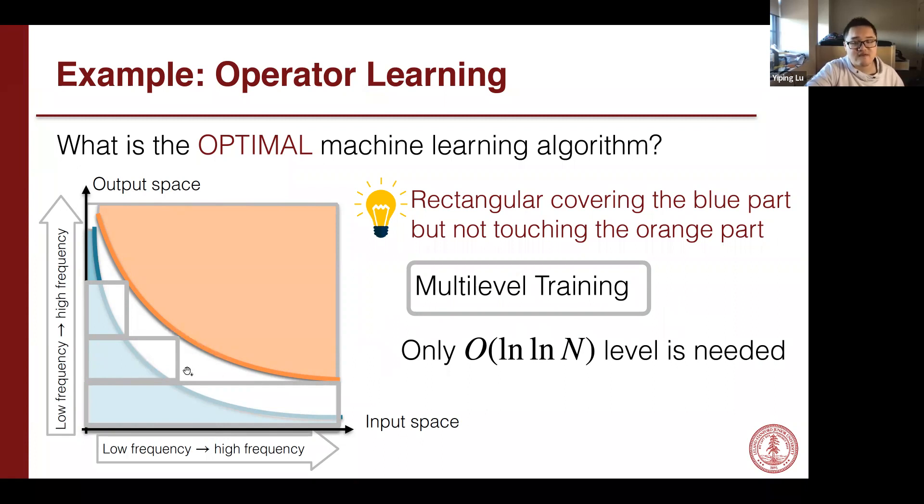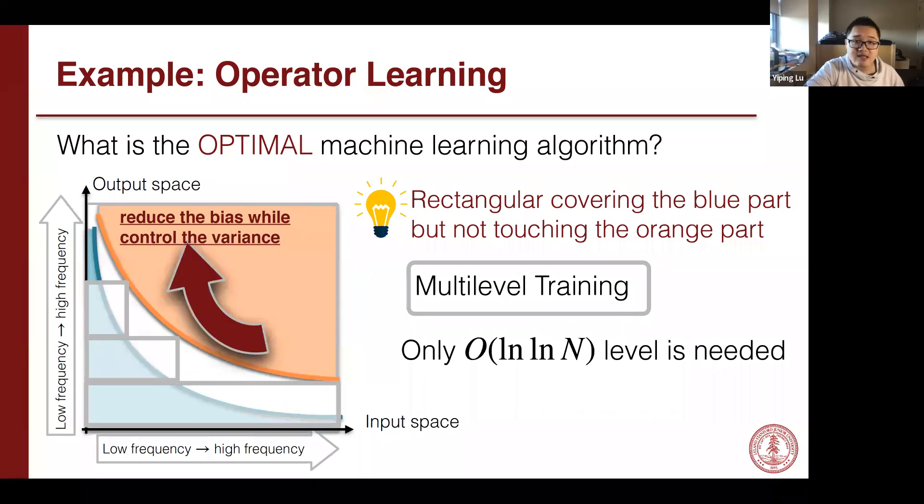Our algorithm is to perform multiple levels of training. We have multiple rectangulars, meaning multiple ridge regressions with different regularizations. And we ensemble them together so that we can cover all the blue area without touching the orange area. In most cases, only log N levels are needed. Our idea here is actually very similar to multi-level Monte Carlo. You can reduce the bias while controlling the variance at the next level.